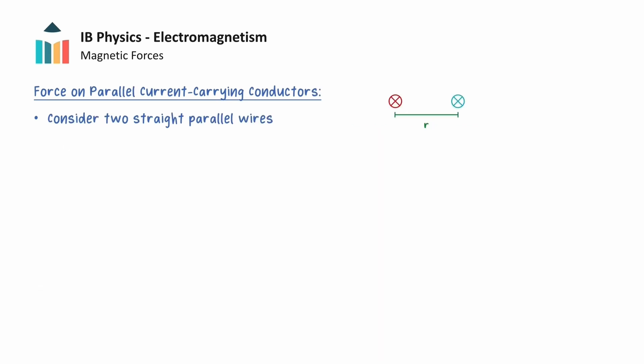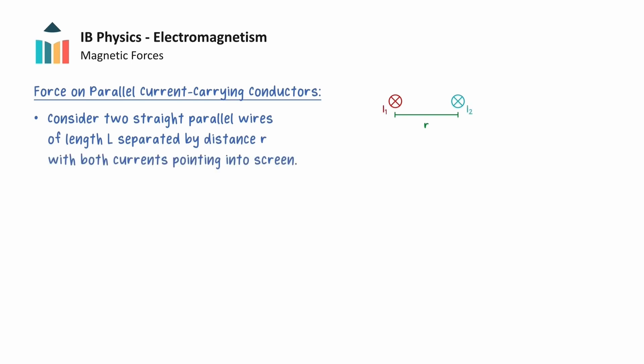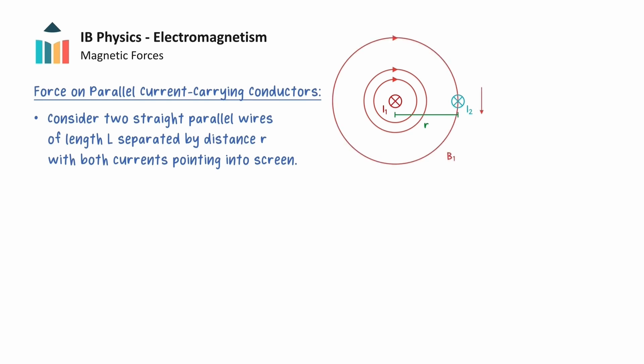We can now consider what happens when we have two current-carrying wires that are parallel to each other. These two wires have length L, are separated by a distance R, and carry currents I1 and I2 that are both directed into the screen. Wire 1 is carrying a current, so this must produce a circular magnetic field, and this will point downwards at the position of wire 2. Wire 2 is at a right angle to the magnetic field produced by wire 1, so wire 2 must experience a magnetic force due to the magnetic field from wire 1. By pointing the right thumb into the screen and the four fingers downwards, we see that the force on wire 2 from the field of wire 1 acts to the left, towards wire 1.